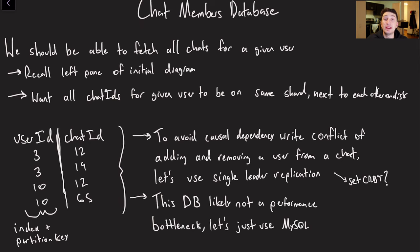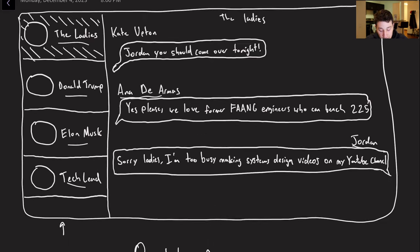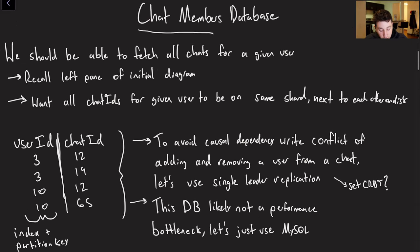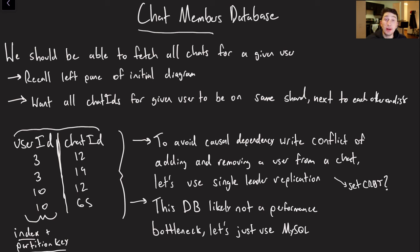The first thing I'll do is introduce some key data structures and database schemas. The first is the chat members table. When we have a chat, we need to know for a given user what chats that user is in — important for building that left-side chat list view. We have user ID on the left and chat ID on the right. As long as we index and partition by user ID, we can ensure queries to find all of my chats land on a single database partition.